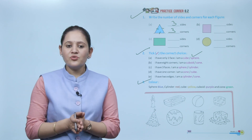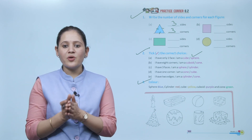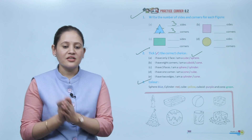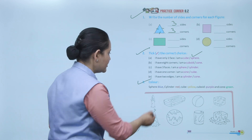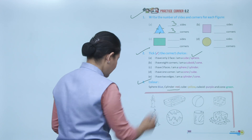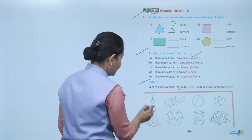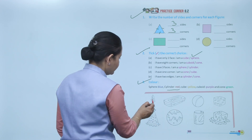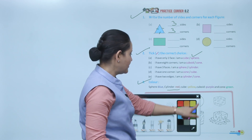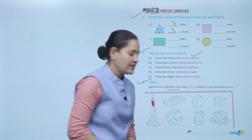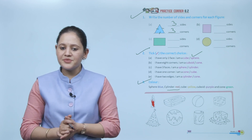Color the shapes: cylinder in red, cube in yellow, cuboid in purple, and cone in green. For example, a candle — the shape is cylinder — so you will color it red. According to the given color code, color all the objects.